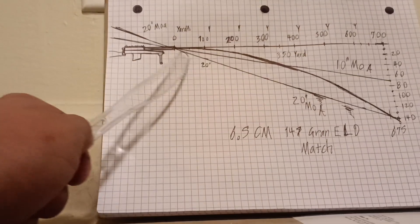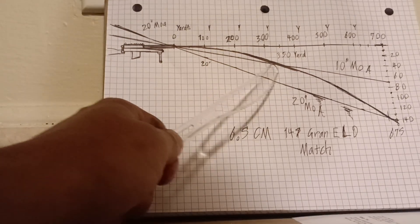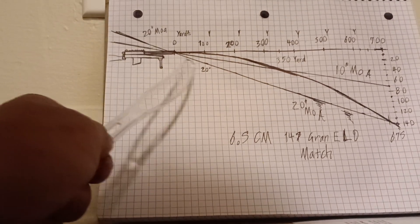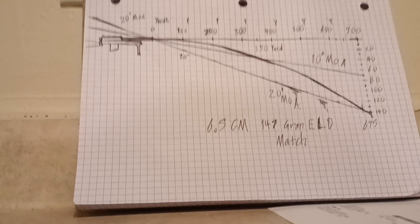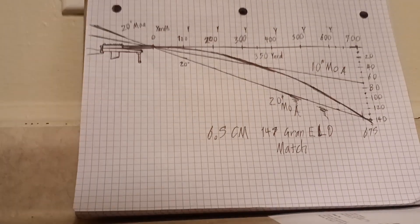The third line is what a 10 MOA rail does, and your fourth line is what a 20 MOA rail does. It is to scale, it's just the scale is kind of odd.